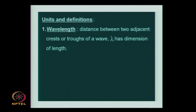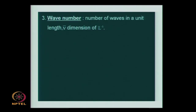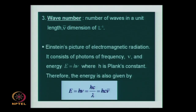The wavelength is the distance between two adjacent crests or troughs and has the dimension of length. The frequency is the number of waves passing a given point per unit time, with dimension T⁻¹. The wave number is the number of waves per unit length. Planck's constant H relates the energy of the wave to all these parameters.